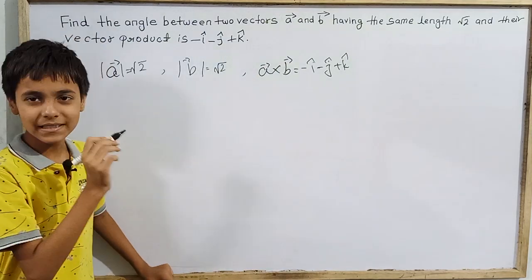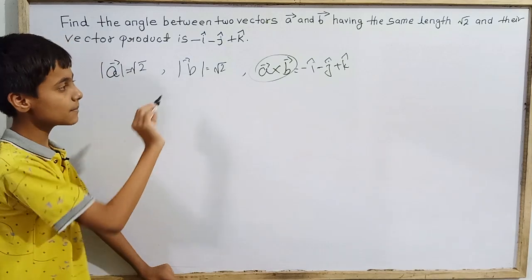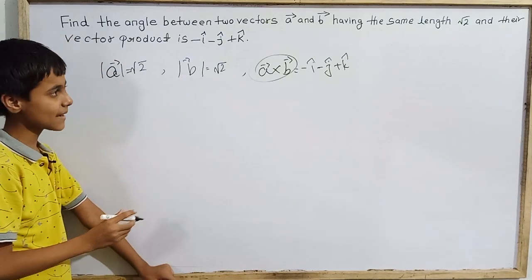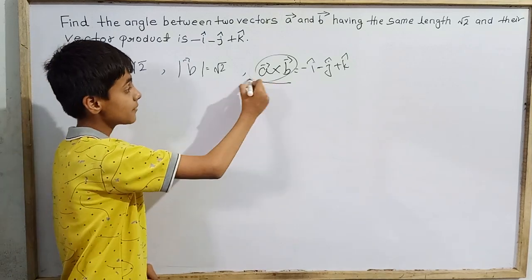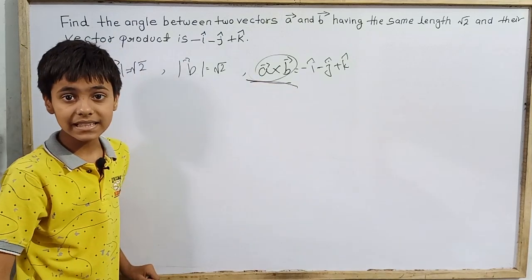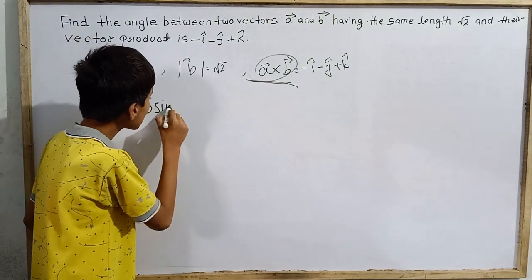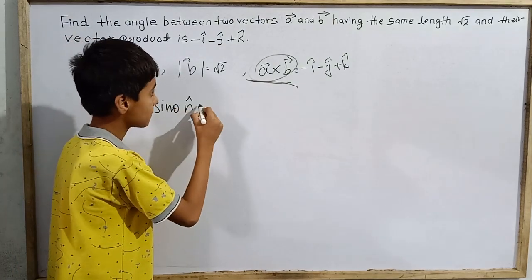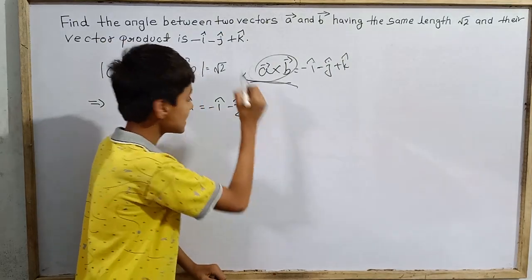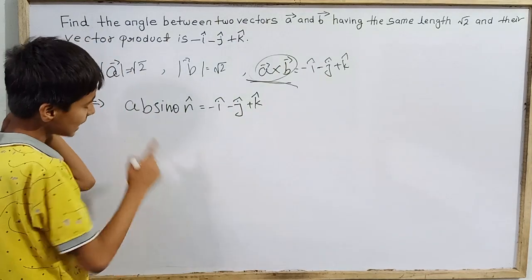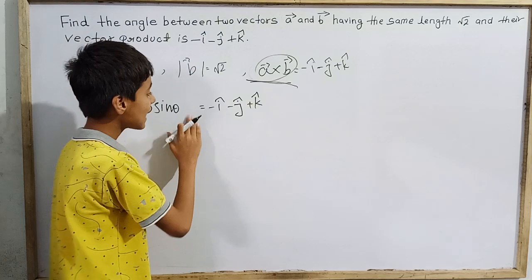Since I know that vector a cross vector b is -î - ĵ + k̂, I will use the formula: |a × b| = |a||b| sin θ. So the magnitude of a × b is the magnitude of (-î - ĵ + k̂).